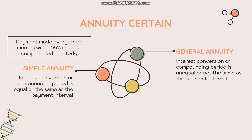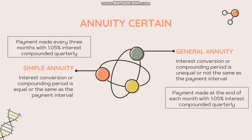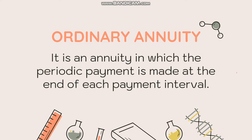If the compounding period is not the same as the payment interval, we call it general annuity. For example, payment made at the end of each month with 1.05% interest compounded quarterly — the payment interval is monthly but the interest compounds quarterly, so they differ, making it a general annuity.